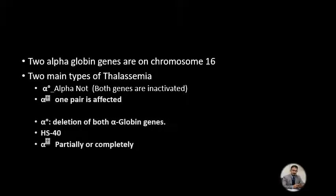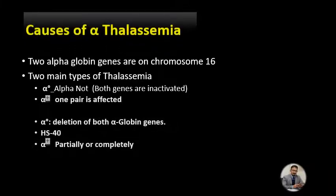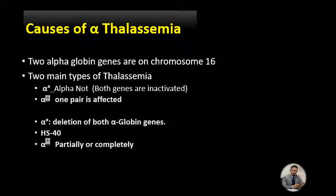Regarding the causes of thalassemia and molecular pathology, there are two alpha globin genes on chromosome number 16. There are two main types: alpha-naught thalassemia and alpha-plus thalassemia, symbolized as α⁰ thalassemia and α⁺ thalassemia.